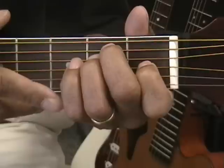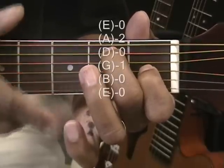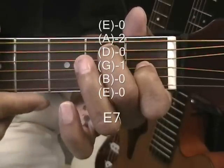Now we're going to make E7 by simply removing the ring finger, like that, and strumming all the strings. So that's our E7 chord.